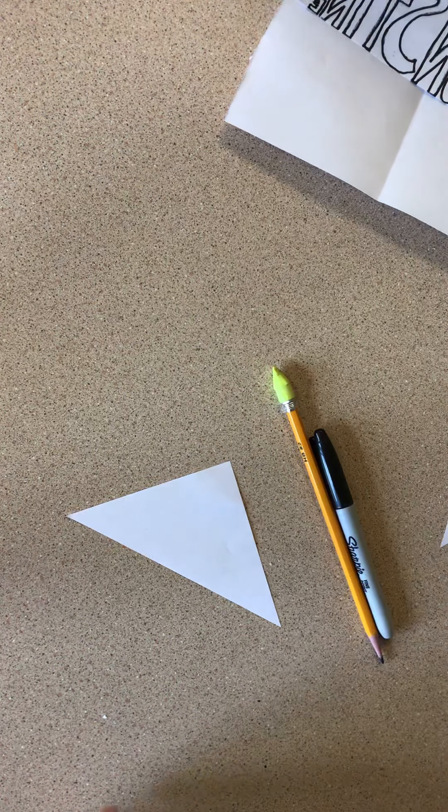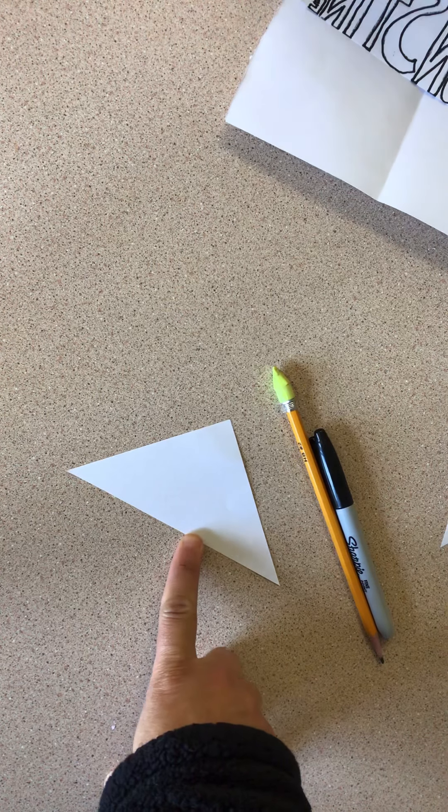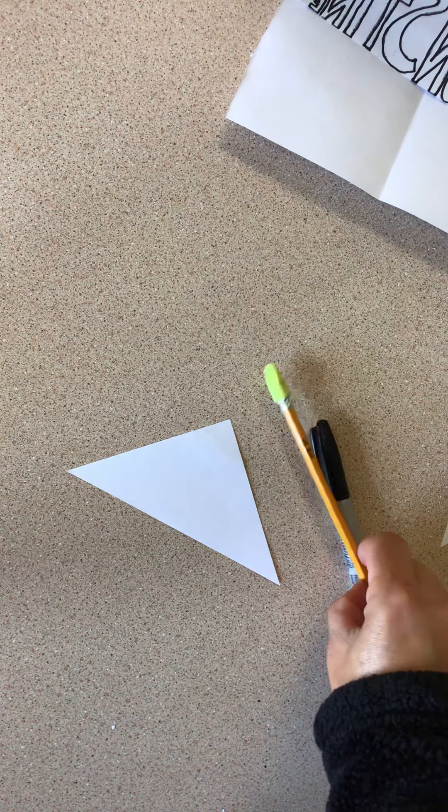All right, so what you'll need to get started is one of these triangles. They're on the front table, a pencil, and a sharpie right away.